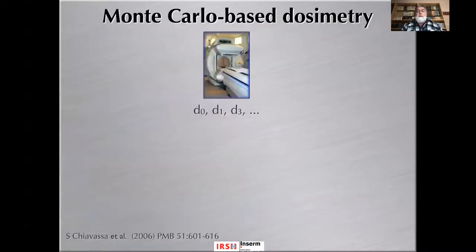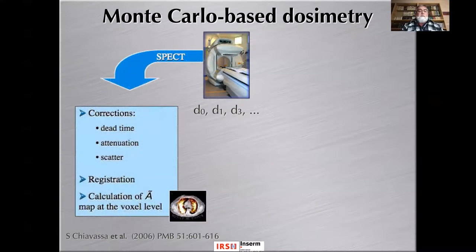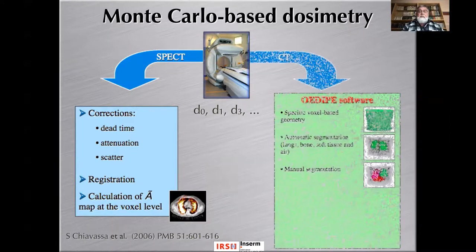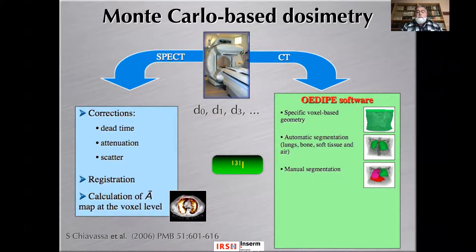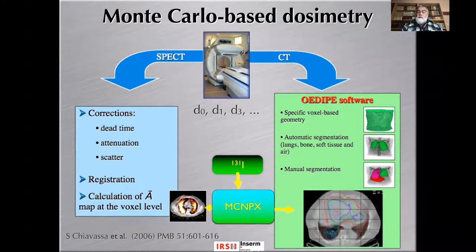Monte Carlo-based dosimetry is again the gold standard. You have images at D0, D1, D3, activity quantified with different corrections, and accumulated activity. From the CT you segment different organs or regions — automatically when density differences are important, or manually. Then, for a given isotope such as Iodine-131 and a given Monte Carlo code, you perform the calculation and obtain isodoses that you can superimpose on the anatomy.